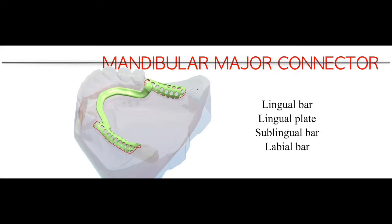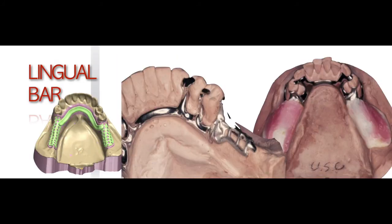Another important parameter: since the bar must have space from the gingival margin, you need to measure whether there is enough depth on the lingual surface to deliver the lingual bar major connector. Check with a probe from the free gingival margin to the bottom of the floor of the mouth at the lingual frenum area. Ask the patient to lift the tongue up while probing the depth, because when the patient relaxes the tongue, the floor of the mouth may change in level.